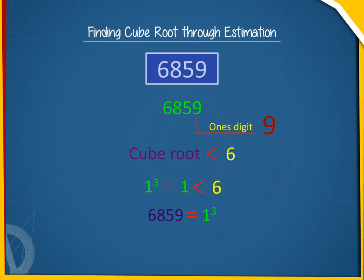So, the tens digit in the cube root of 6859 is 1.